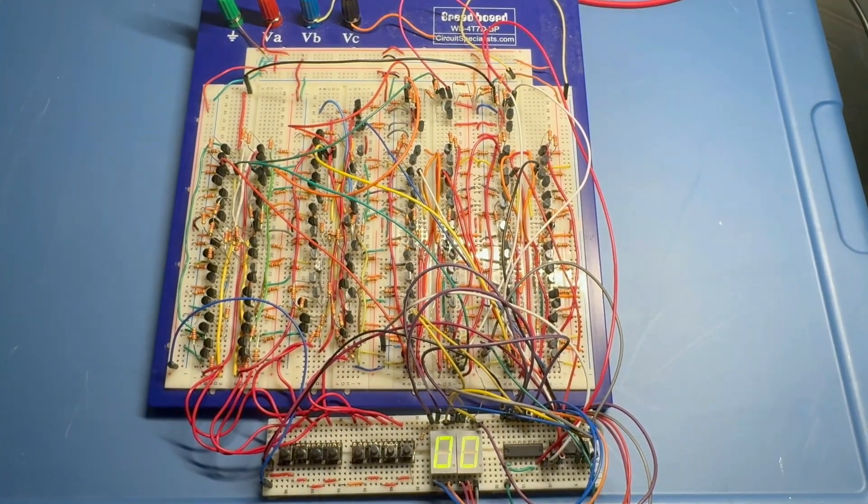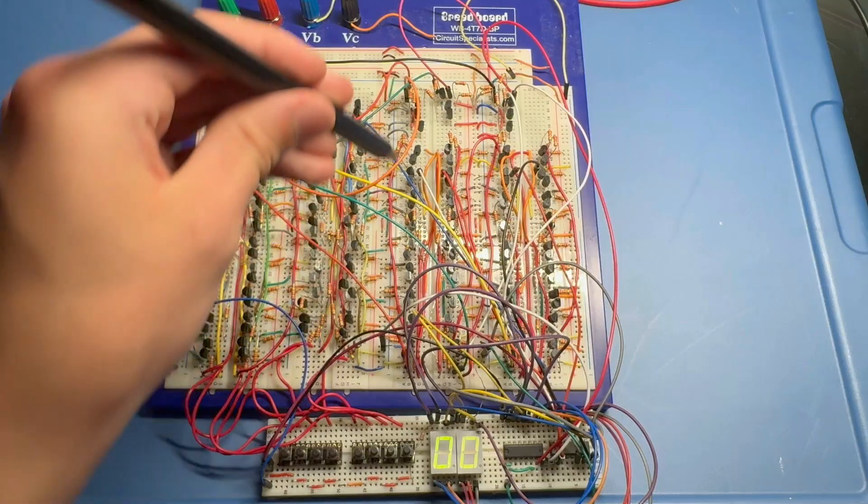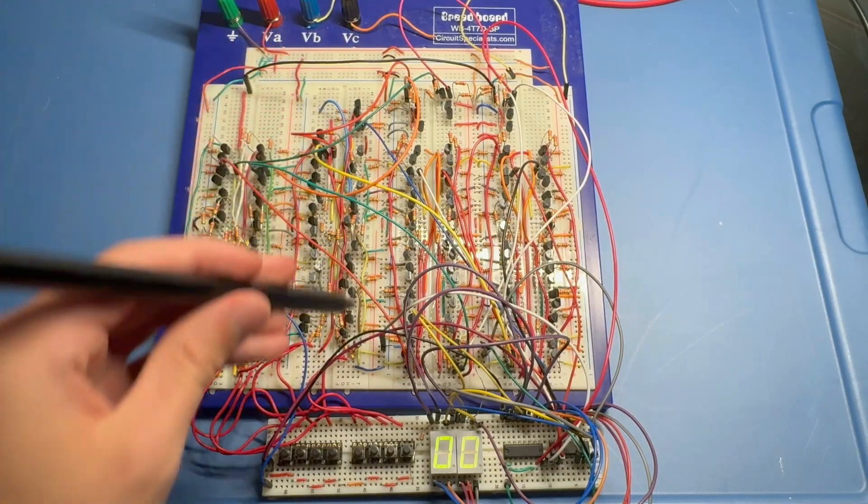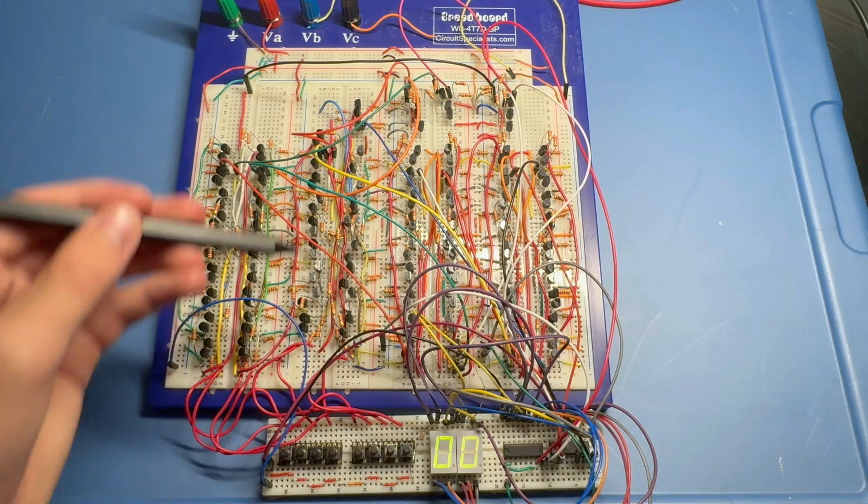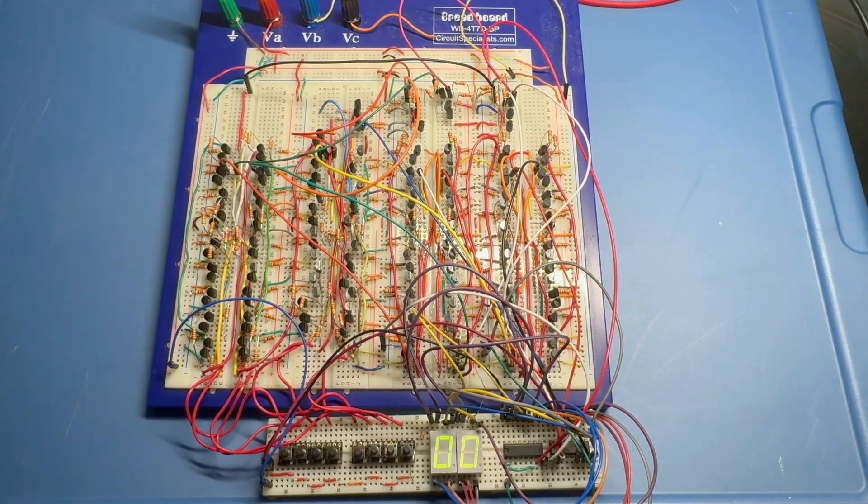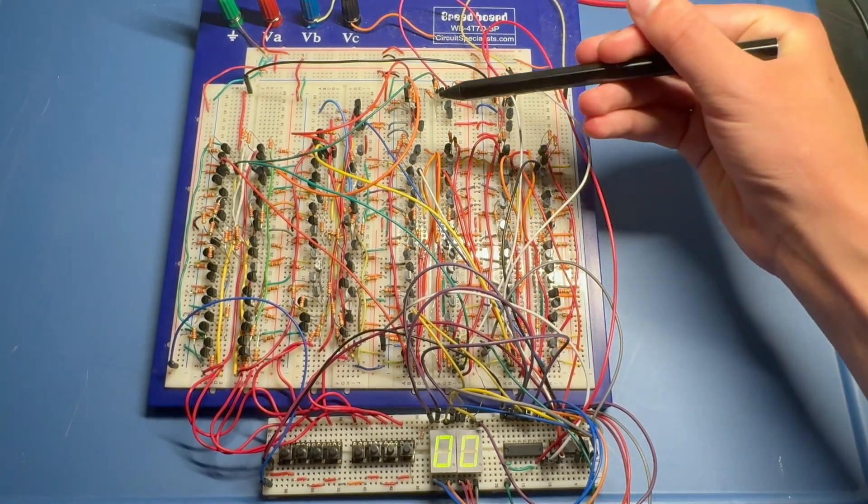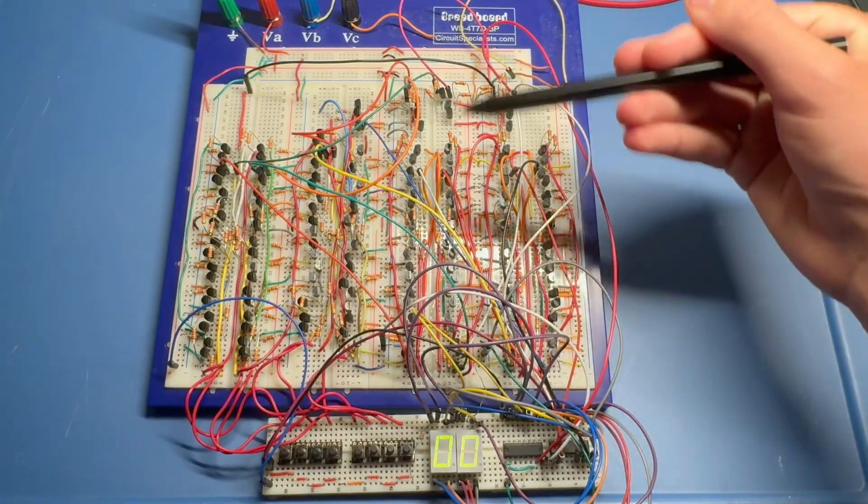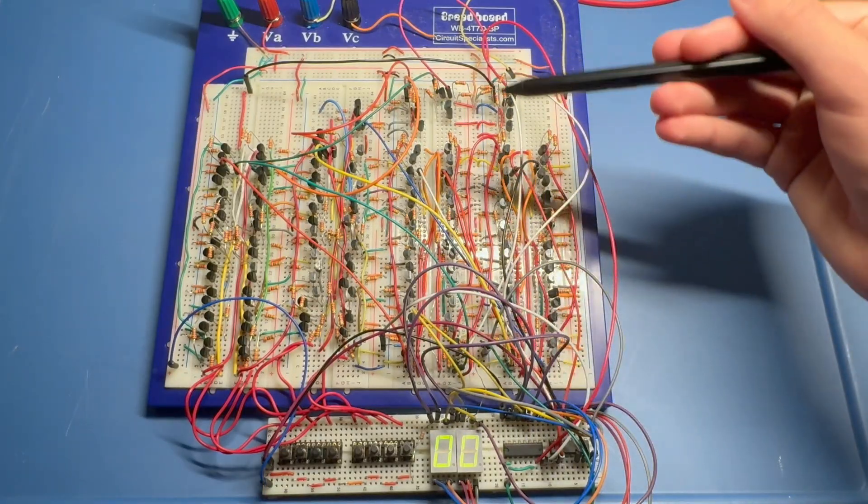As it turns out, when you're working with 4-bit numbers, subtracting by 10 and adding by 6 actually do the same operation. So we just need to add 6 to our number, which means we need 4 more full adders. This is where most of the clutter comes from. It basically doubled the size of the circuit.